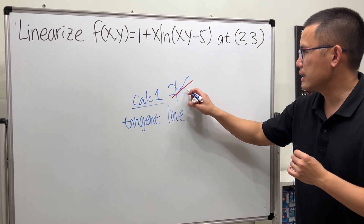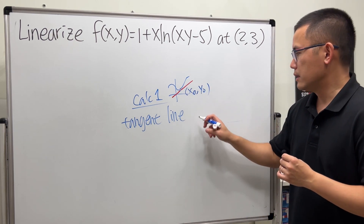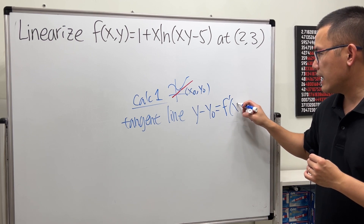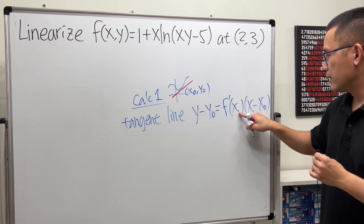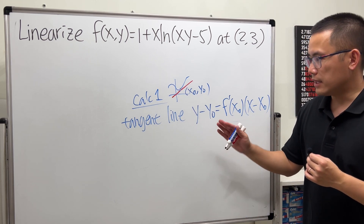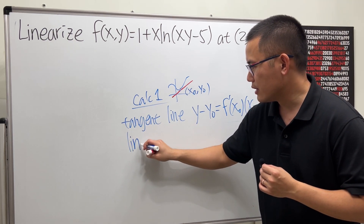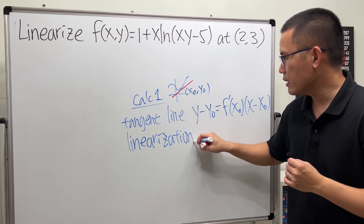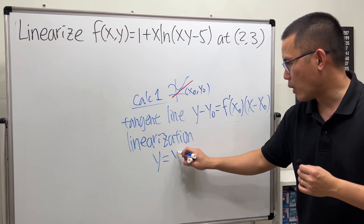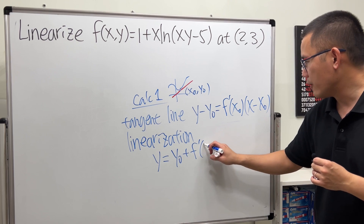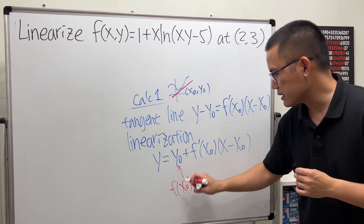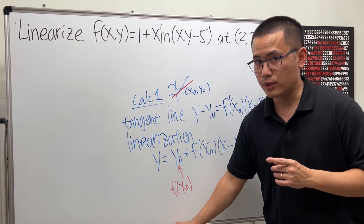To get the tangent line at a point (x0, y0), we have: y − y0 = f'(x0) · (x − x0), just like y − y1 = m(x − x1). And if you want to get the linearization of the function at this point, move this to the other side and solve: y = y0 + f'(x0)(x − x0), where y0 is the value of the function at x0.